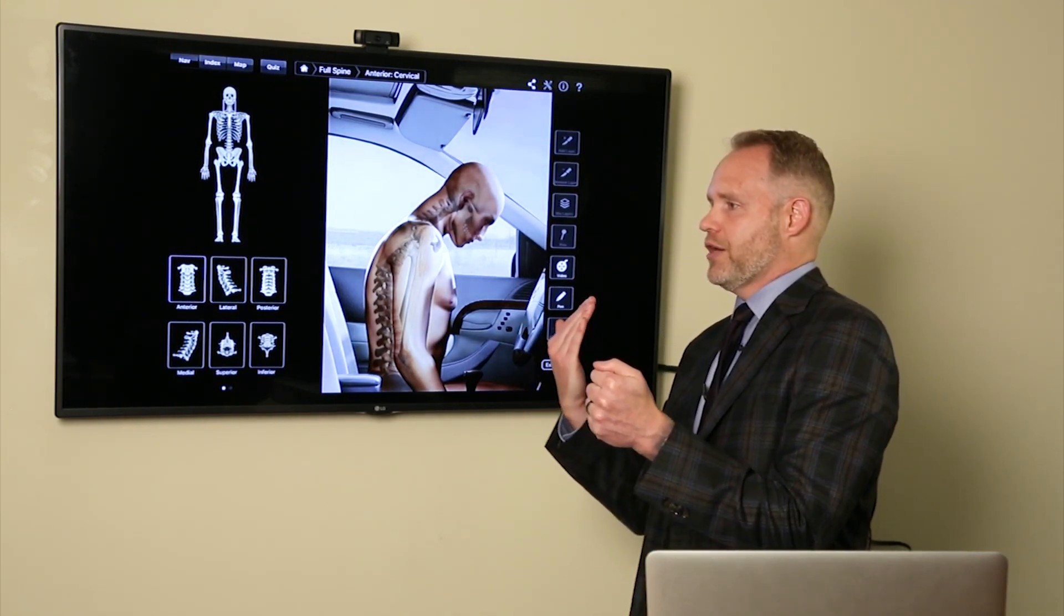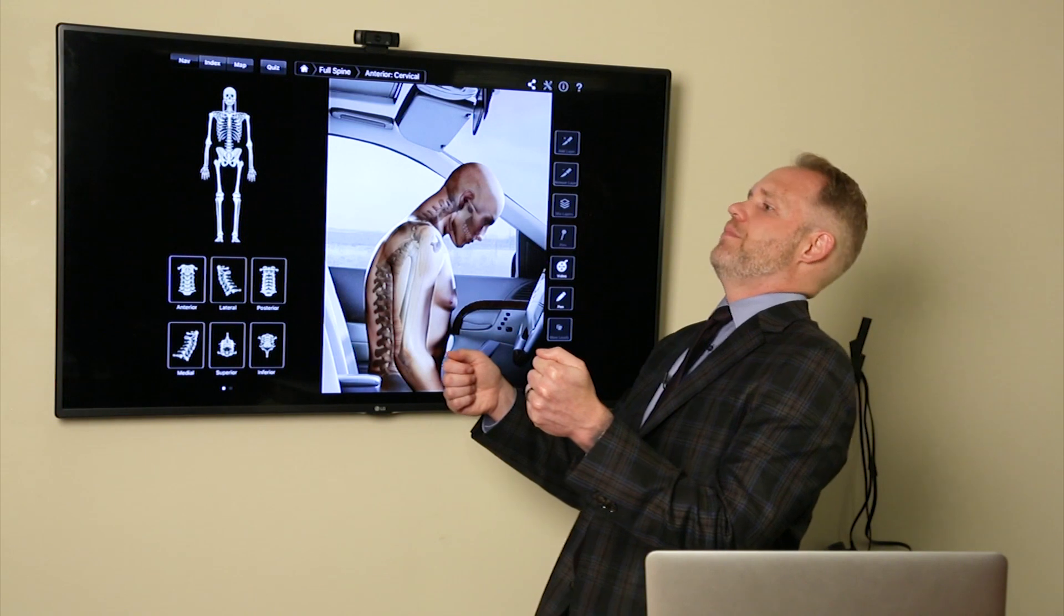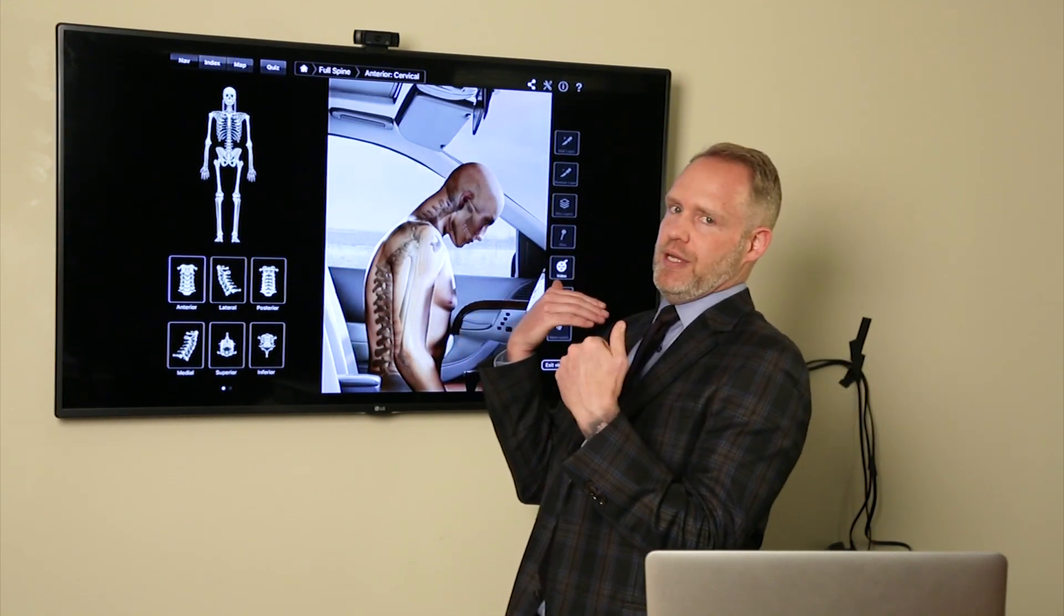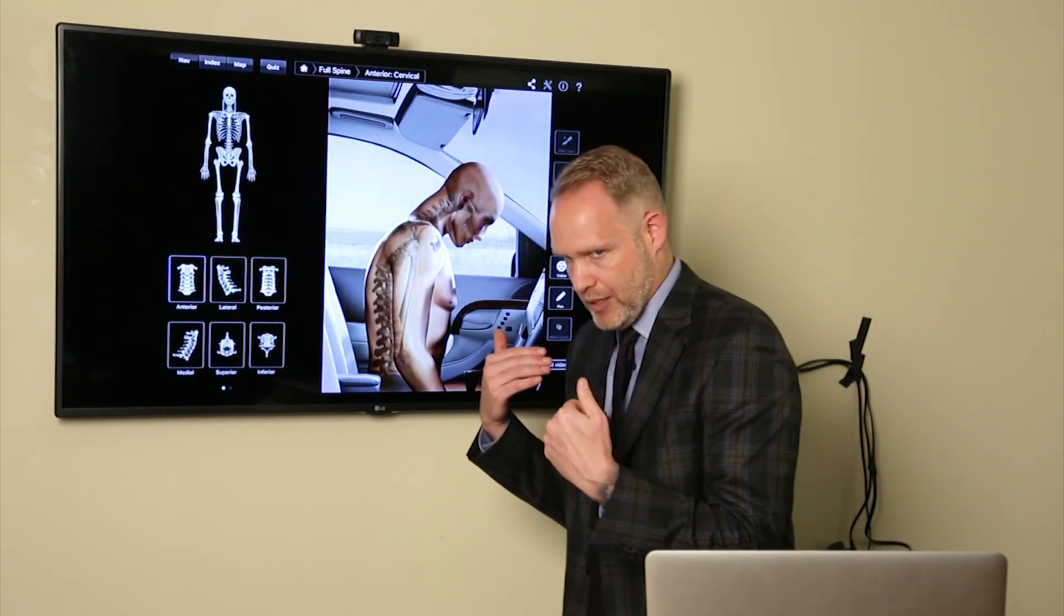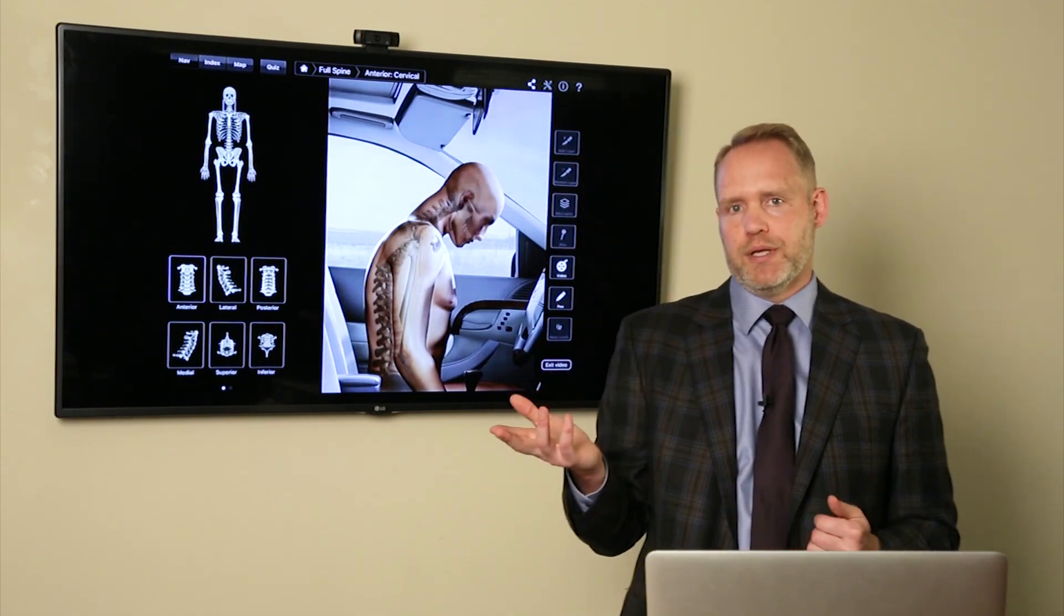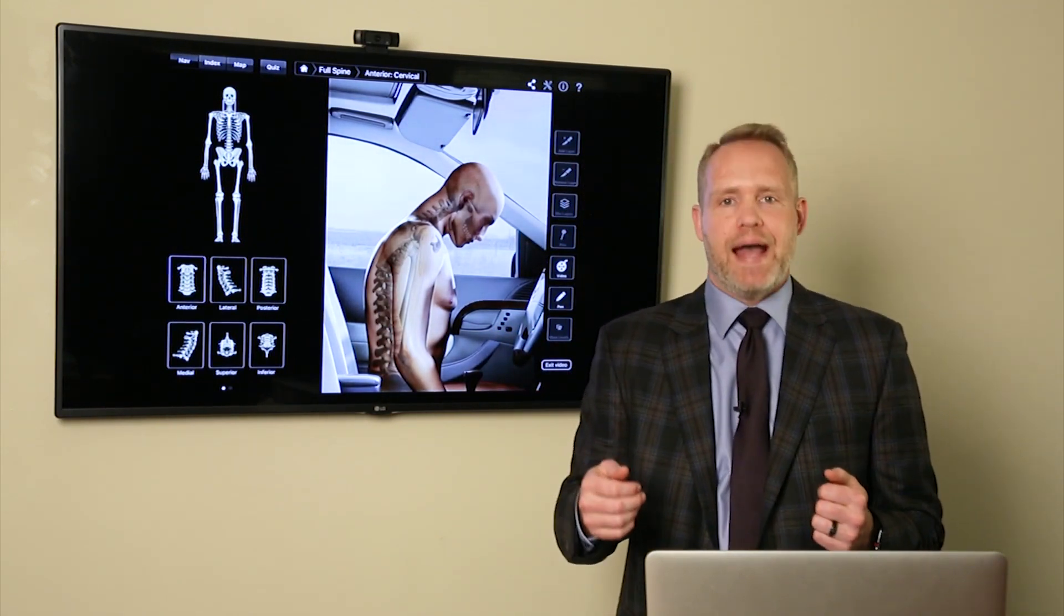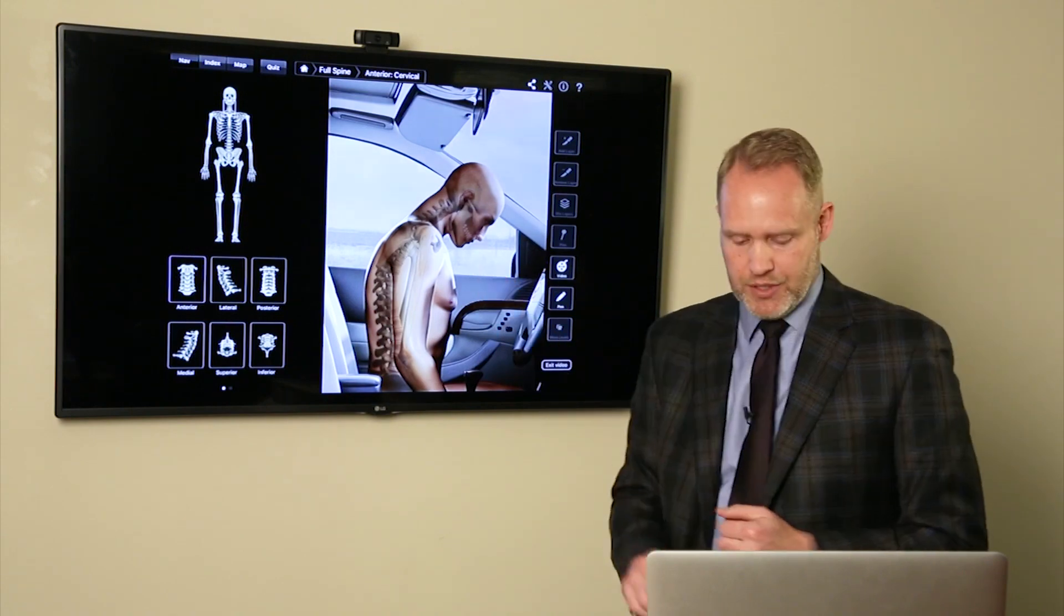So if you imagine you're hit from behind, your body wants to stay, but your car is moving out from underneath you. So suddenly your body is going backwards relative to your car, but you have the seat behind you. It's going to catch up and flip you forwards. So that's what we call whiplash, that sort of whipping back and then forth motion.